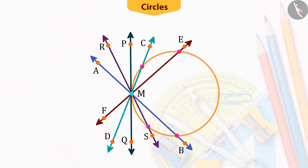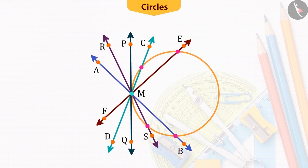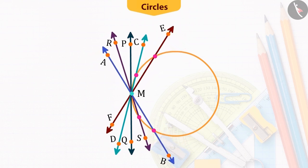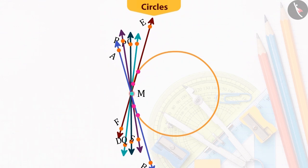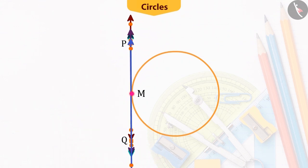Also, if you look here, you can observe that on bringing all other lines except PQ to the position of PQ, the common point of the respective line and the circle gradually comes closer to the common point M and ultimately it coincides with the point M.